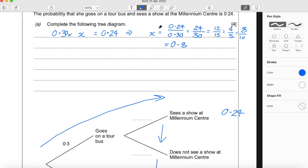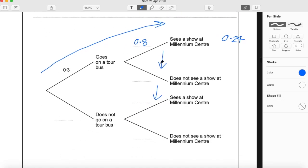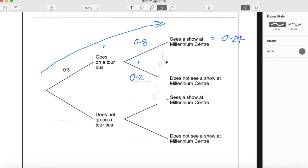So that's the probability of Leah going to see a show at the Millennium Centre. That's 0.8. So just to show that, 0.3 times by 0.8 gives us the probability of her doing both as 0.24. 0.8 plus 0.2 is 1. So that's what I mean by multiplying through the branches and just adding across the branches.